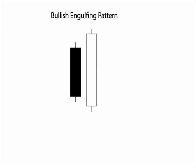This is a bullish engulfing pattern. What you see typically is a trend downward initially, or sideways movement. One could expect this type of downward movement, and this first candlestick in the pattern is the continuation of the downward movement.